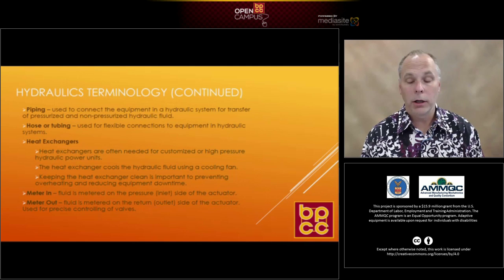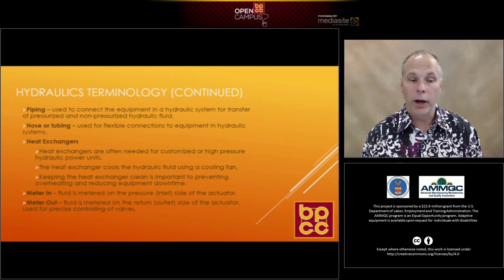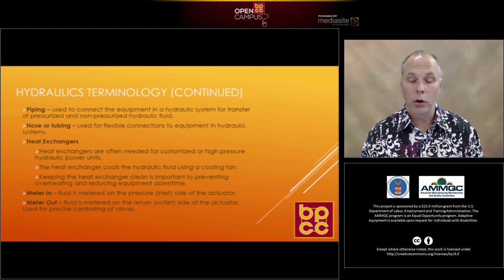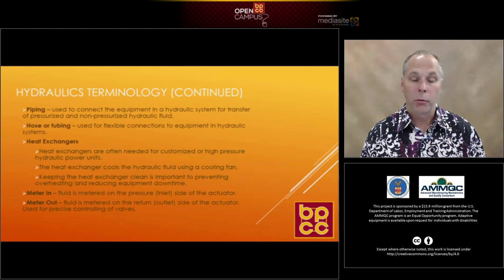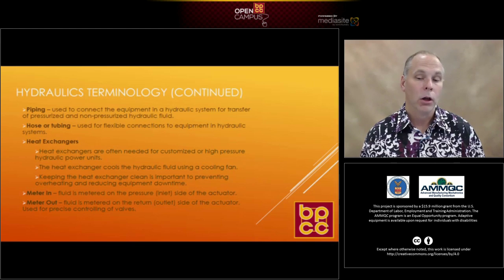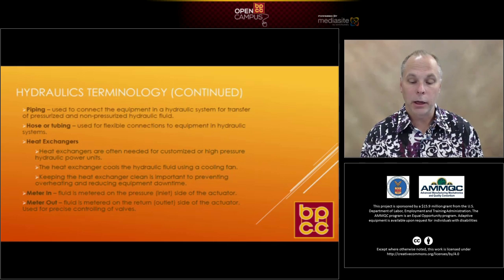Regarding flow and controlling your actuator: if you want your hydraulic cylinder to move at a certain speed, you'll have flow control valves on the inside and outside of that actuator. The best way to achieve precise control of your actuators is to use the metered outside approach — utilize your flow control valve on the outside, adjust it, and that will keep more precise control of your actuators.